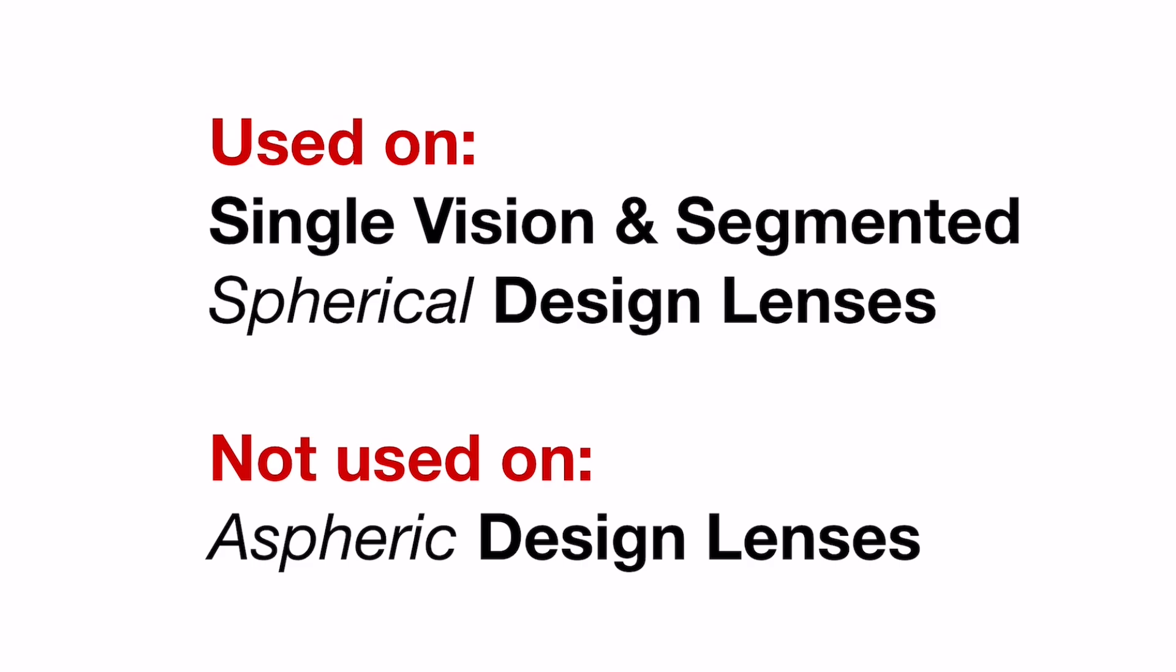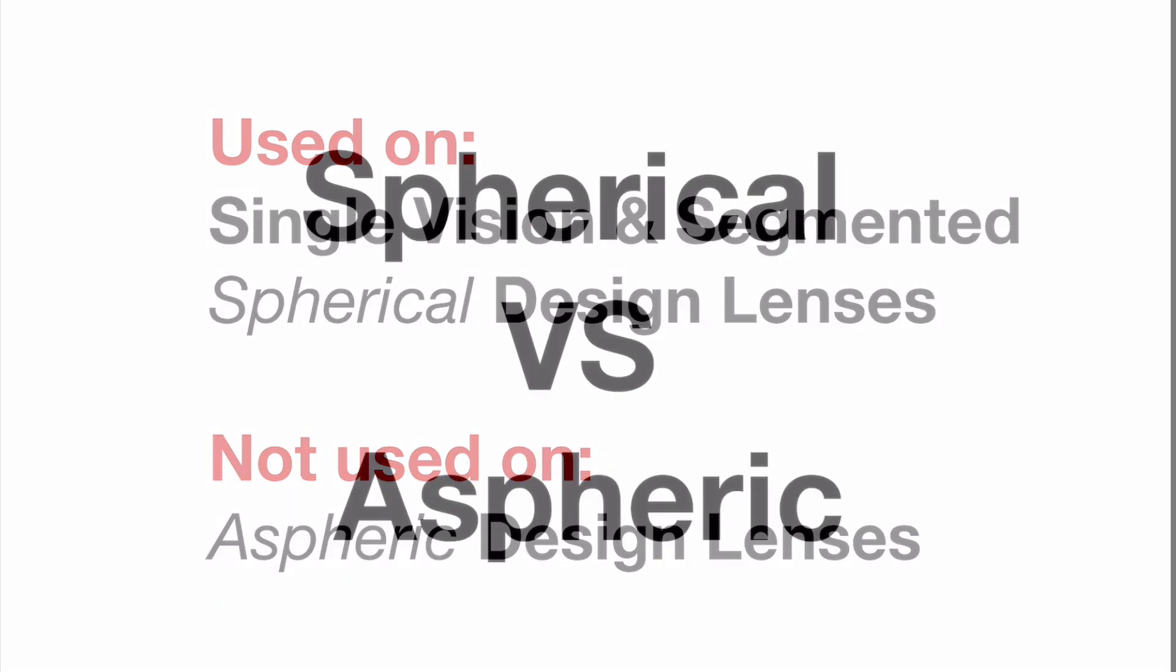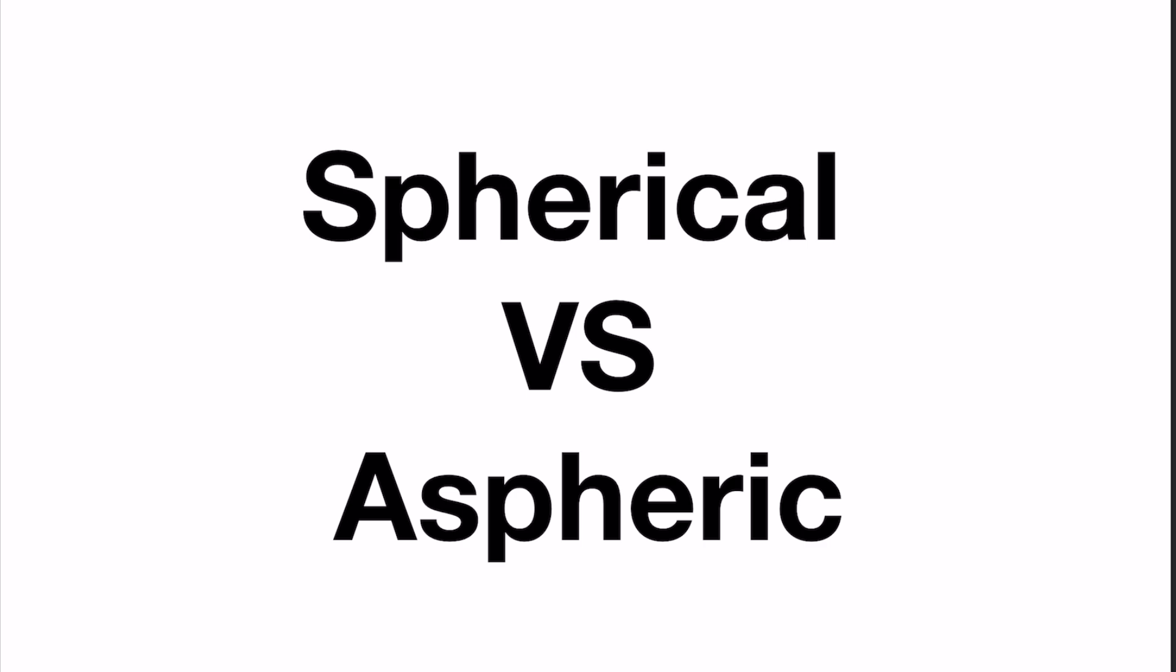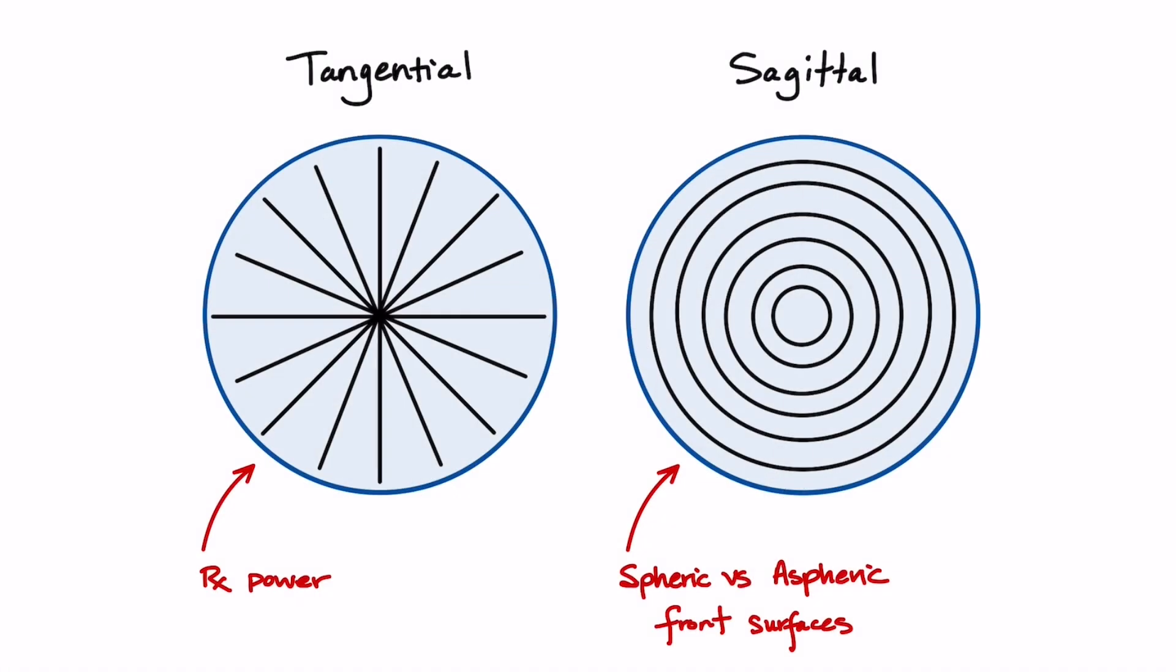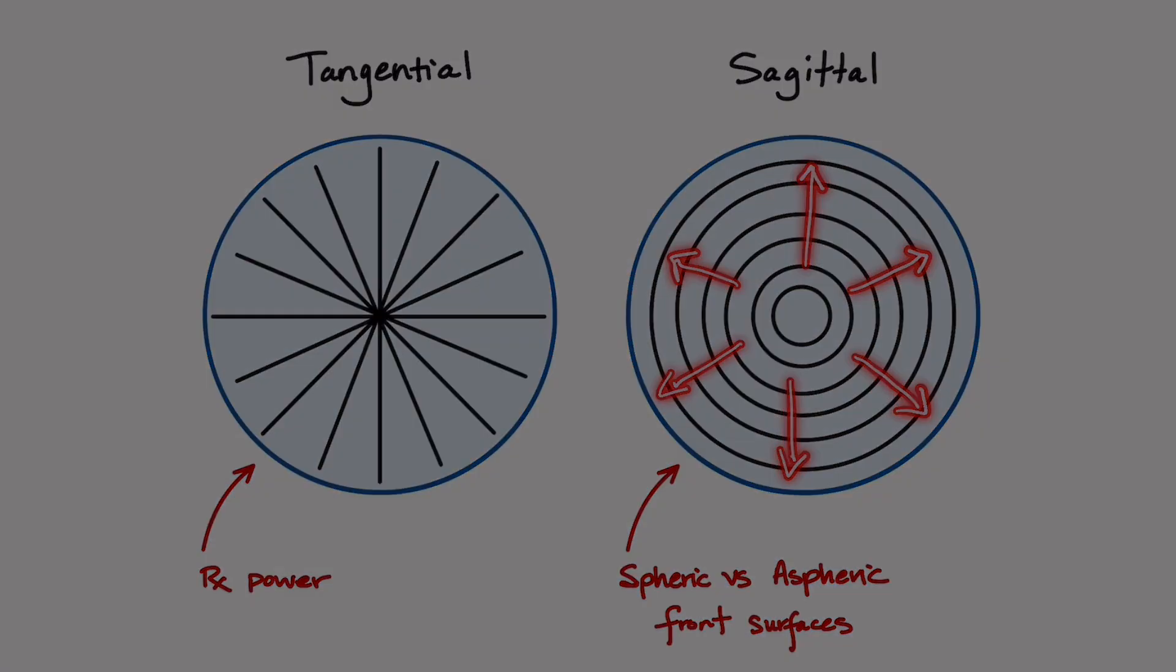It's important to note that this technique can only be performed on spherically designed front surfaces. It is not possible on aspheric design surfaces. When we're talking about spheric versus aspheric, we're referring to the front surface curve on the sagittal plane of the lens. This is the curve from the center to the edges of the lens going out and it's often seen as the profile of the curve.